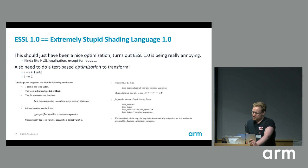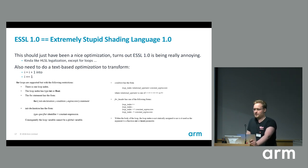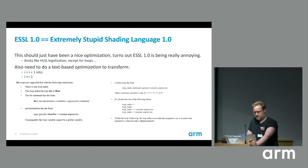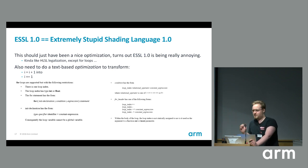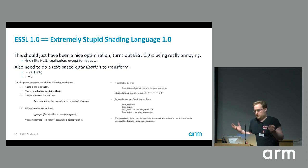There is this shading language I now call Extremely Stupid Shading Language 1.0 — ESSL 1.0 — which anyone who has targeted GLSL ES 2 knows can be painful. This is like actual legalization, except for loops, which is annoying. It also needs to translate i = i + 1 into i++ for some reason — the spec says if you're going to have a for loop, you have to do it exactly that way. But it works on WebGL 1.0.